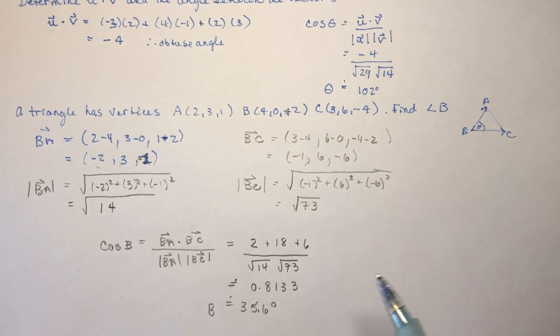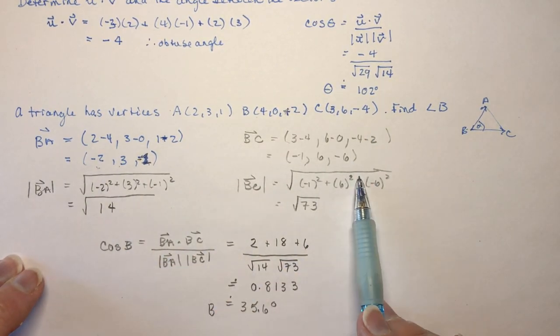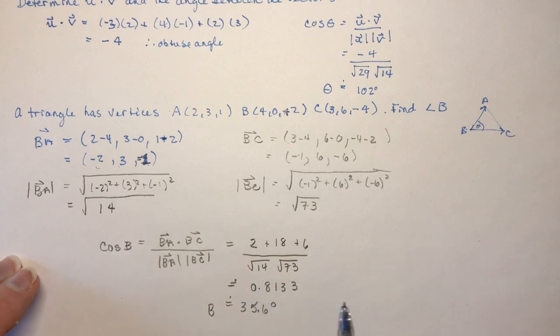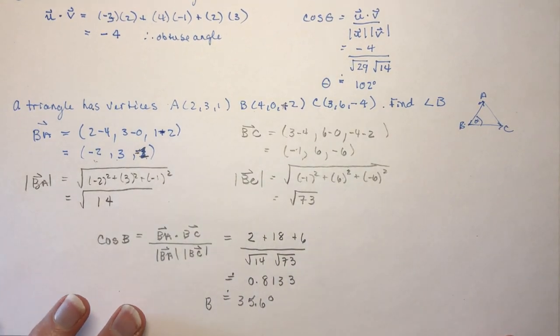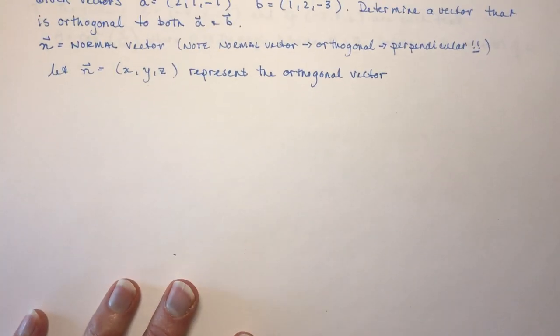So that means B is going to be approximately 35.6 degrees. Okay, so you can make sure you know how to position vectors here, how to find their magnitude, and then it's just simply using the formula to find the angle. Okay, next question.